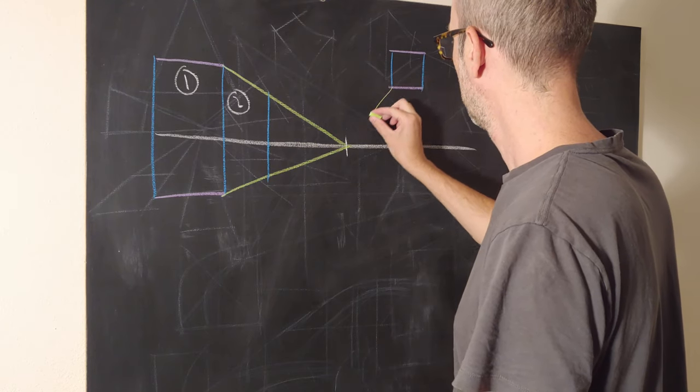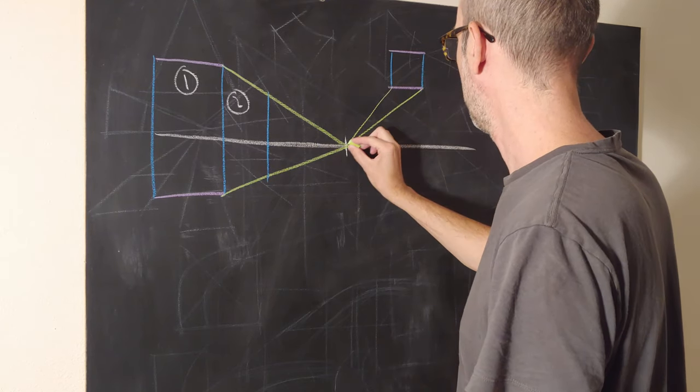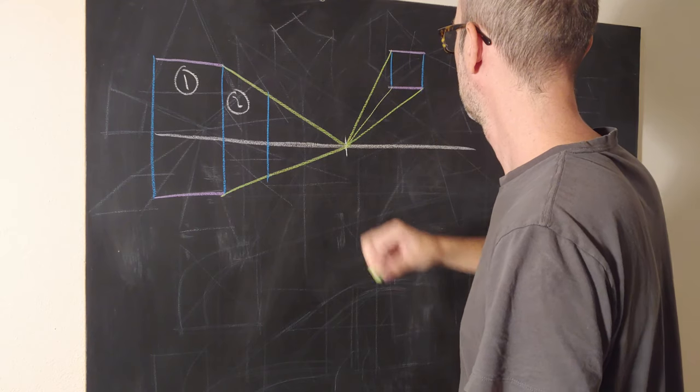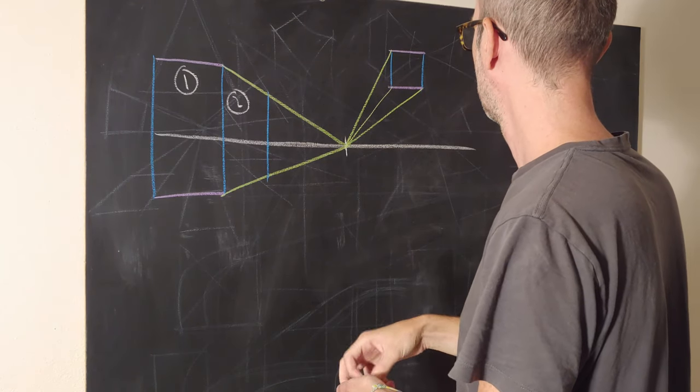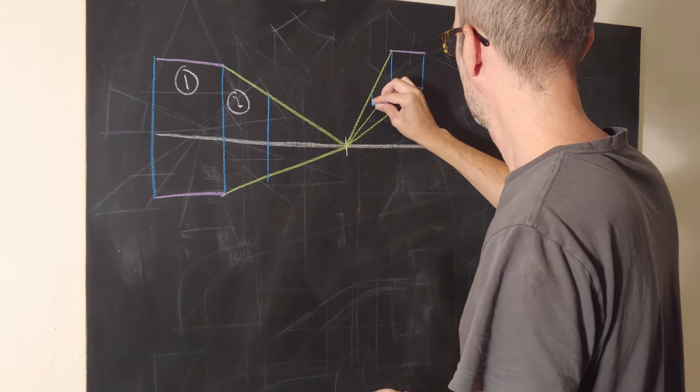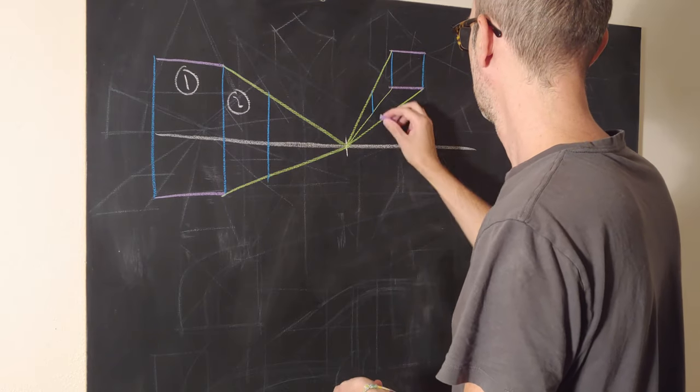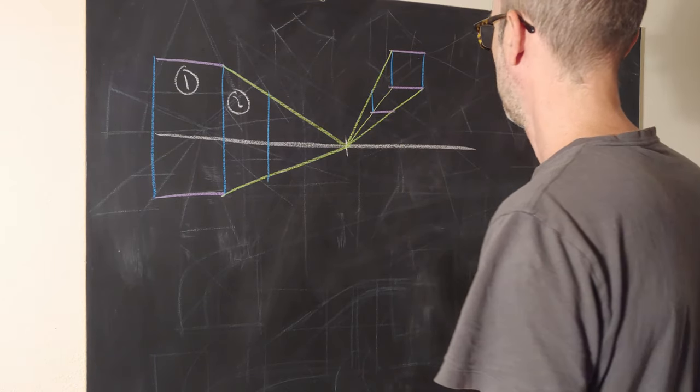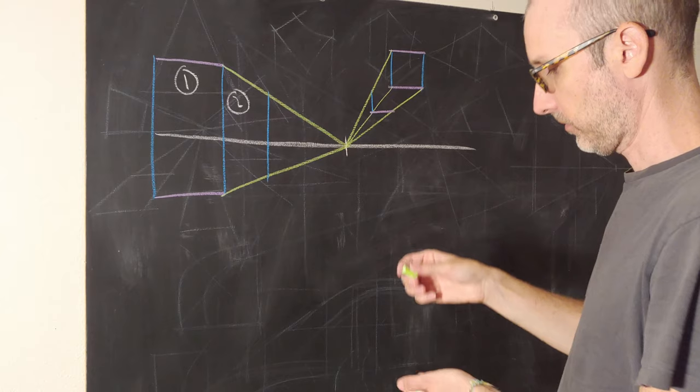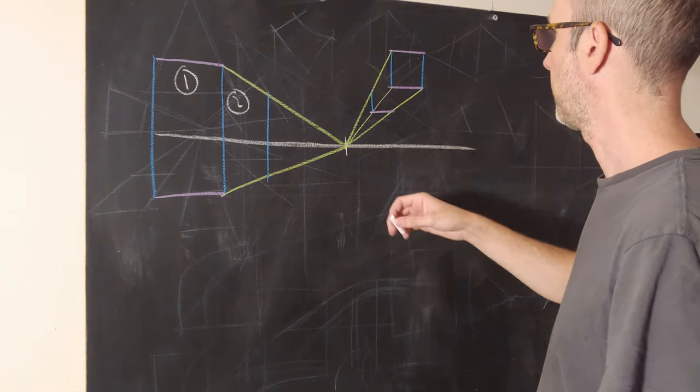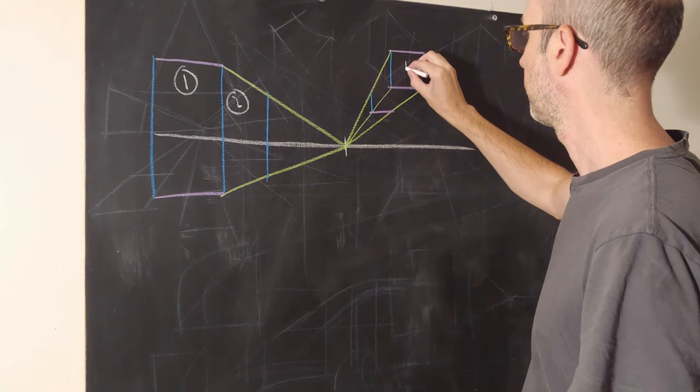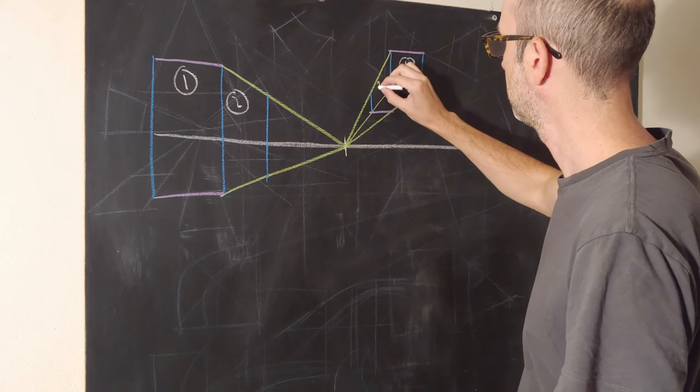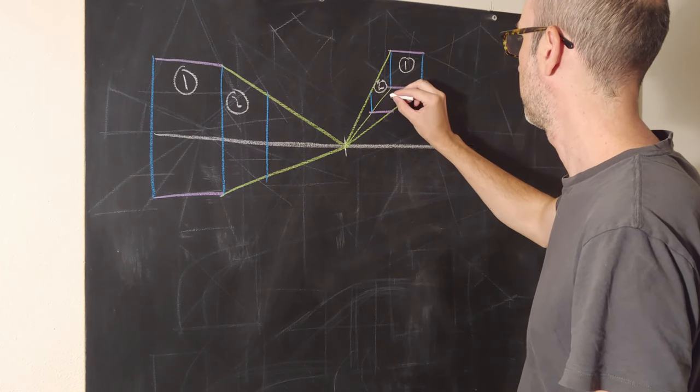So here we're going to create a three-sided box. I'm using three different colors, one color for each type of line we can draw. So here we've got one, two, and this time we've added a third side.